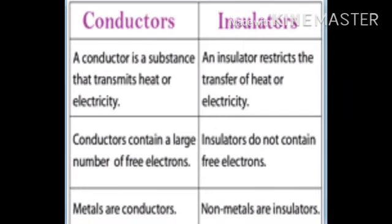An important question: what is the difference between a conductor and an insulator? A conductor is a substance that transmits heat or electricity, while an insulator restricts the transfer of electricity. Conductors contain a large number of free electrons to move from the higher end to the lower end, whereas insulators do not contain free electrons. Metals are mostly conductors; non-metals are insulators.